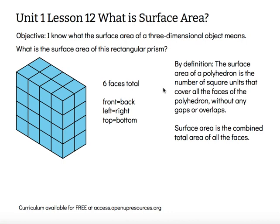It looks like there are only three faces for this rectangular prism, but we know there's a front face, which means there's also a back face. We have the right side, which means there's a left side that matches it. We have the top that we can see, but there's also a bottom that matches it. So we actually have six faces total that we need to account for.